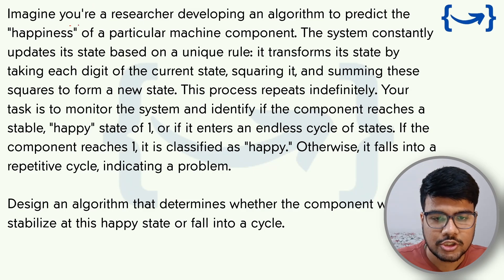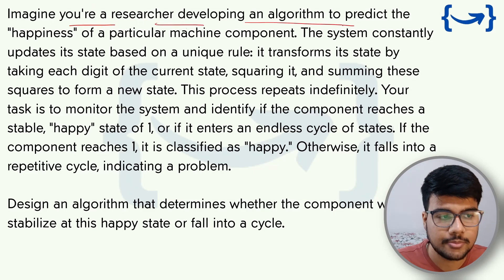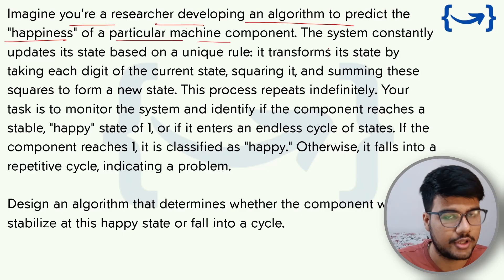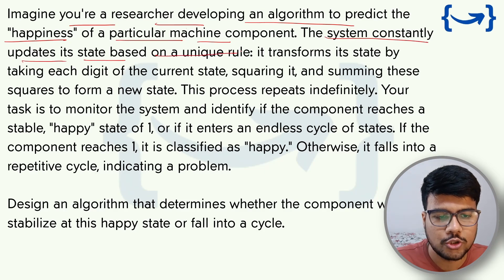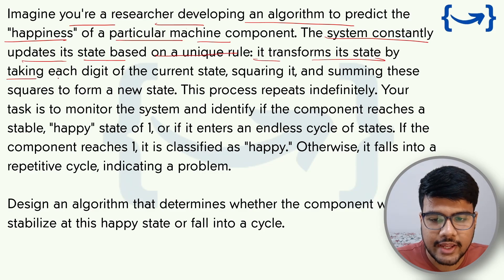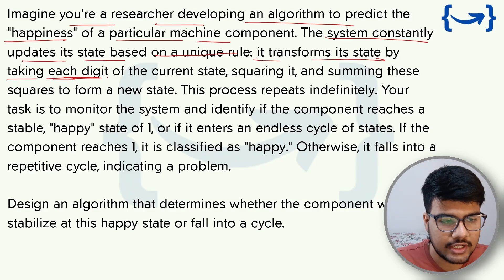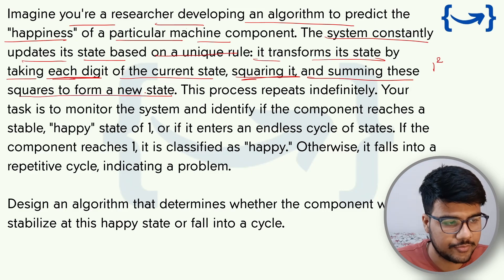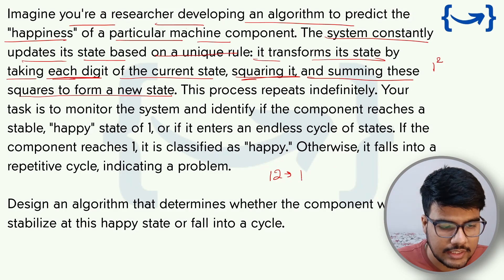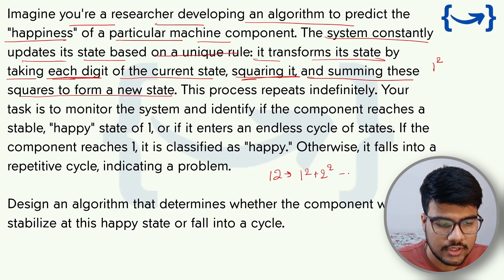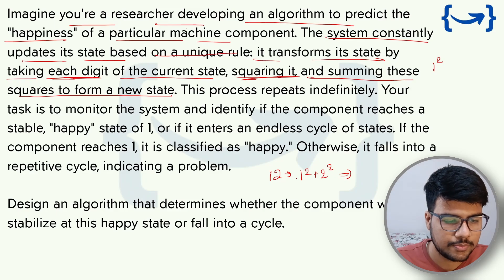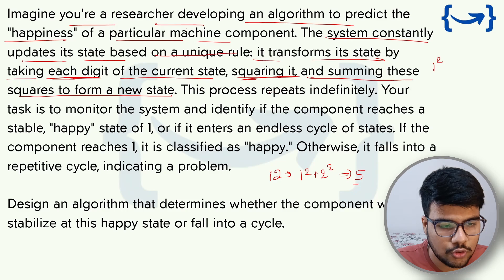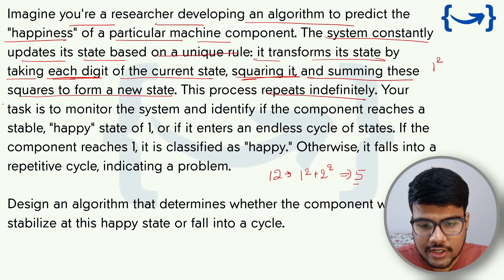The very first problem: imagine you are a researcher developing an algorithm to predict the happiness of a particular machine component. The system constantly updates its state based on a unique rule — it transforms its state by taking each digit of the current state, squaring it, and summing these squares to form a new state. For example, if we have 112, we square each digit and sum them: 1² + 1² + 2² = 6, giving us a new state.